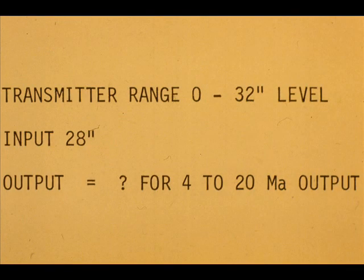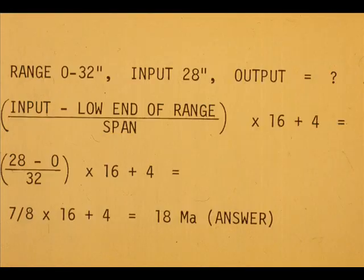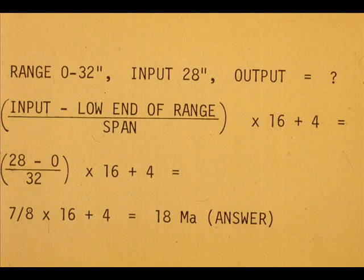The type of measurement units does not affect the method of calculation. Here we have inches of water. The correct output for 28 inches input is 18 milliamps.